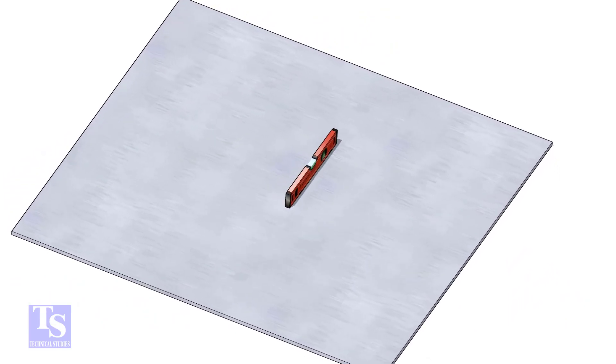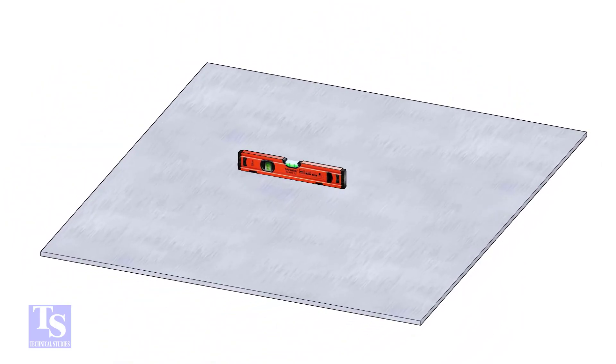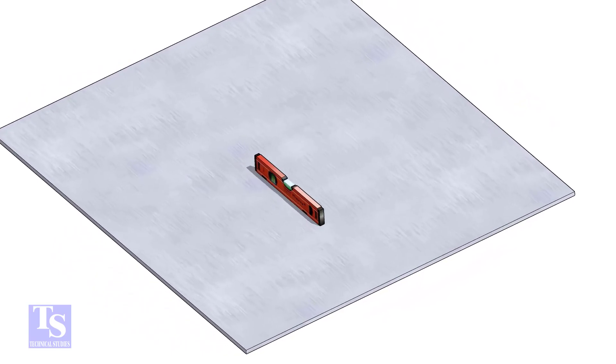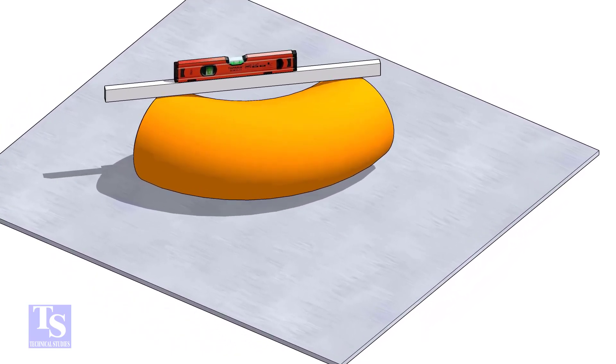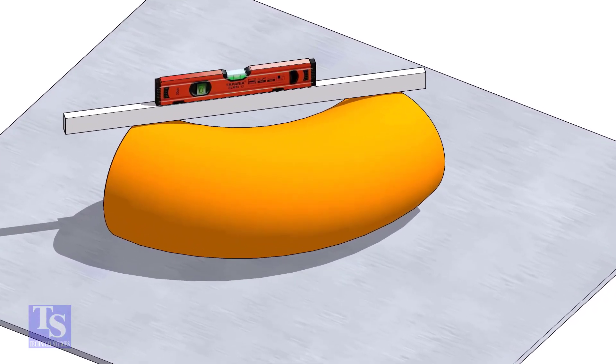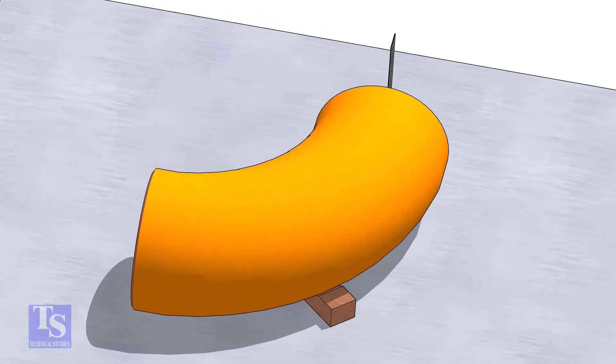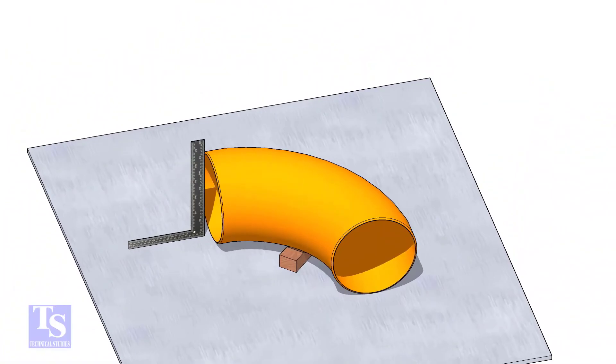Let us mark the center of the elbow. Choose a leveled plate and put the elbow on it. Check the level of the elbow. Check the squareness of the face of the elbow with the plate. If necessary, put some packing below as shown.